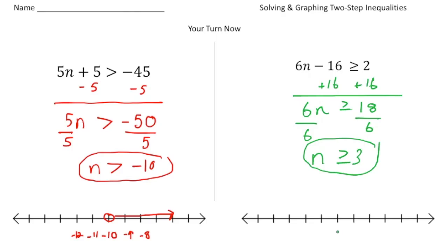Now I'm going to put 3 right here in the middle, with 4 and 5 going to the right, and 2, 1, and 0 going to the left. Since n is greater than or equal to 3, this is going to be a closed circle, and we shade to the right of the closed circle. Any value to the right of 3, including 3 itself, can be a solution to the inequality.